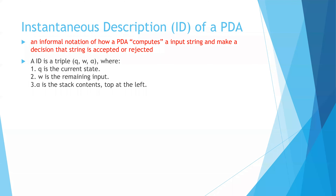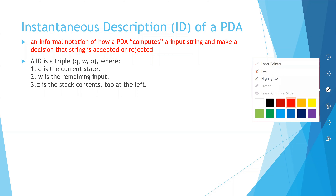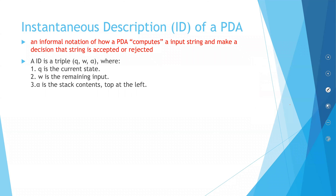Now we will see something called instantaneous description of a PDA, or you can call it the ID of a PDA. It is nothing but an informal notation of how input strings are computed and how the operations are performed so that a string can either be accepted or rejected in a PDA. This instantaneous description is more of a graphical notation.